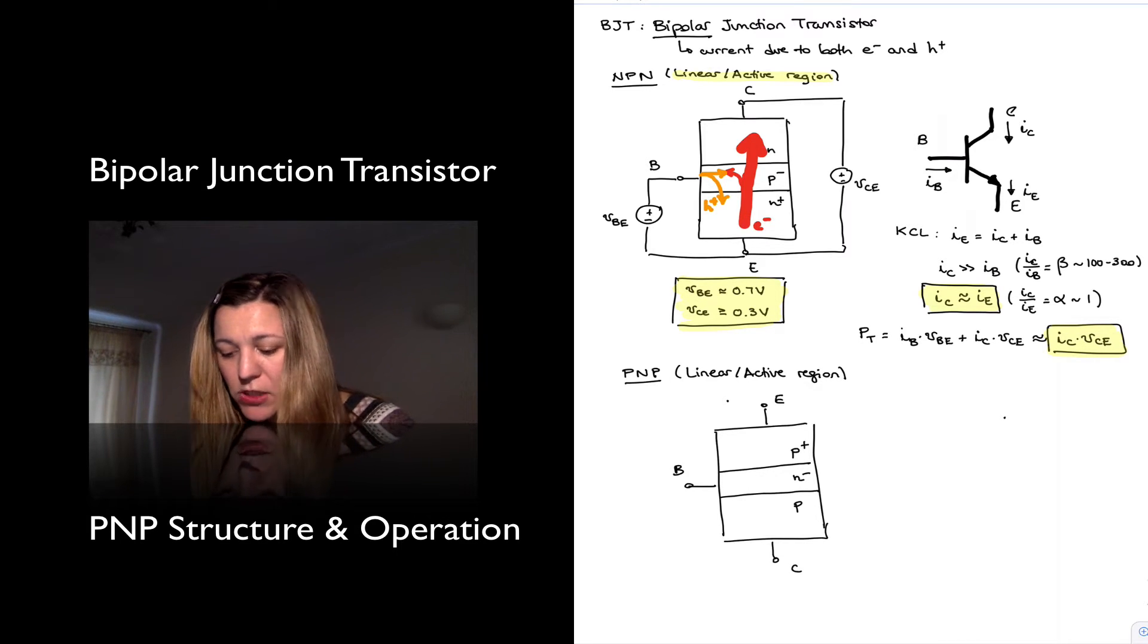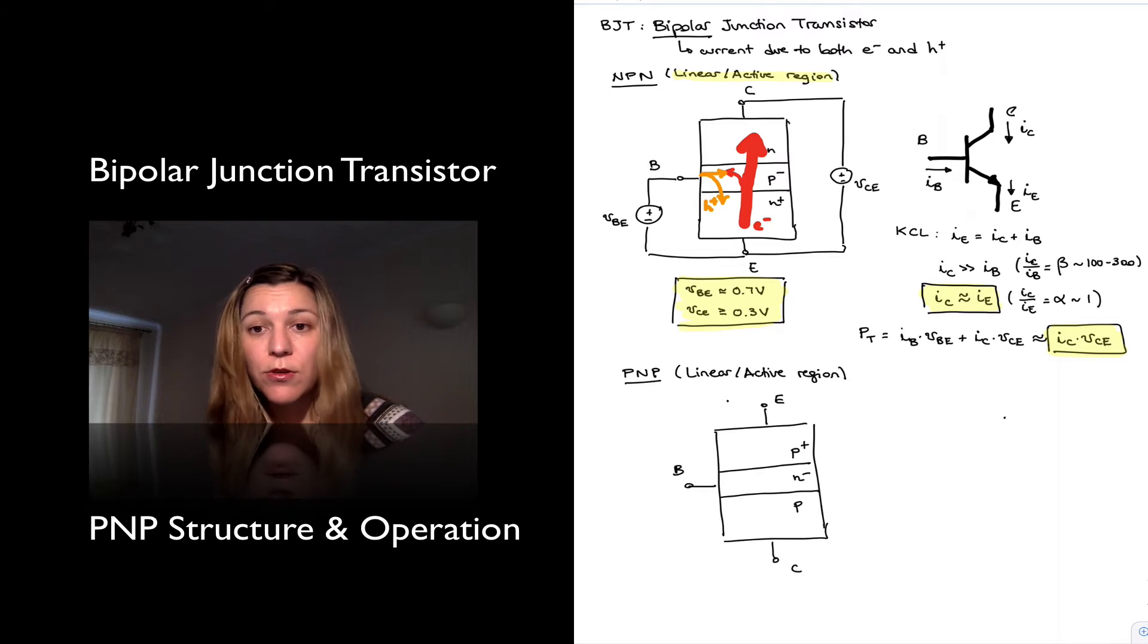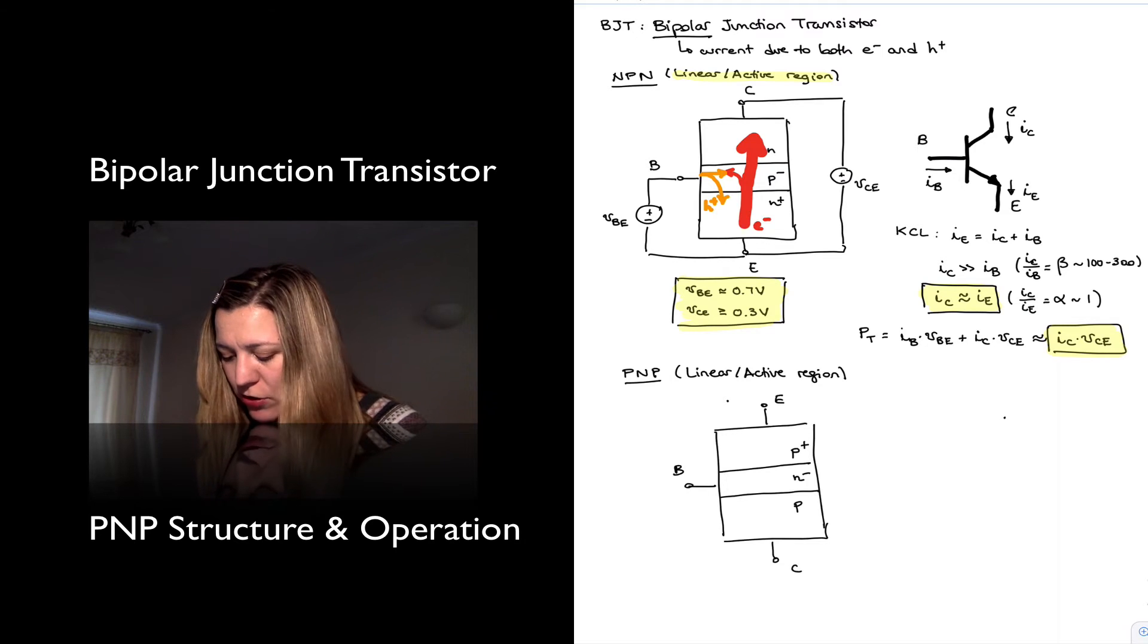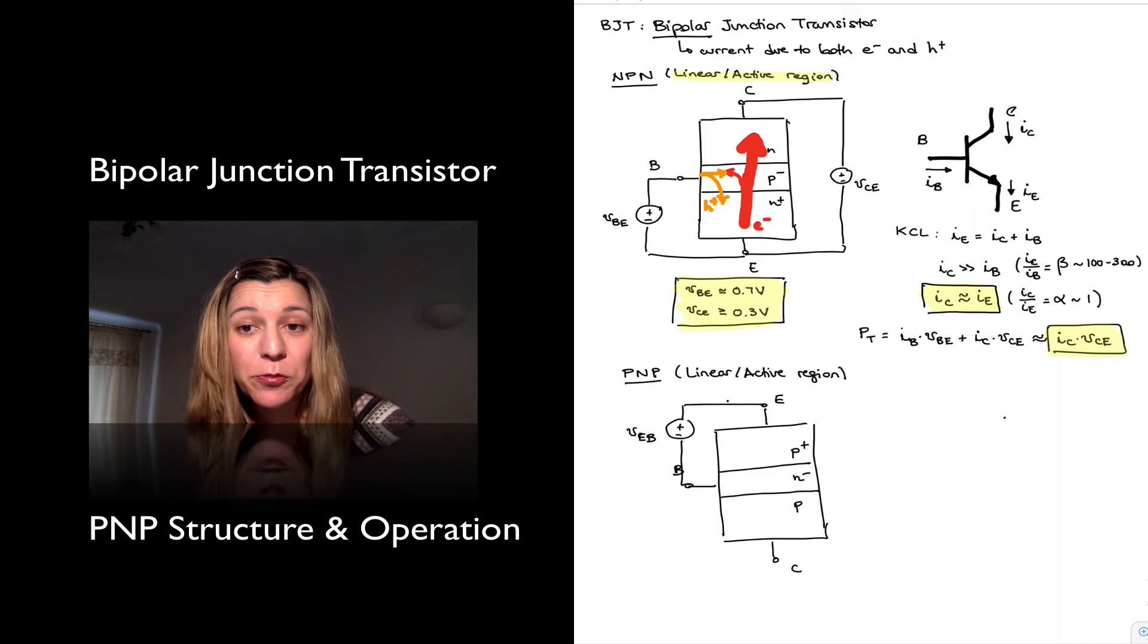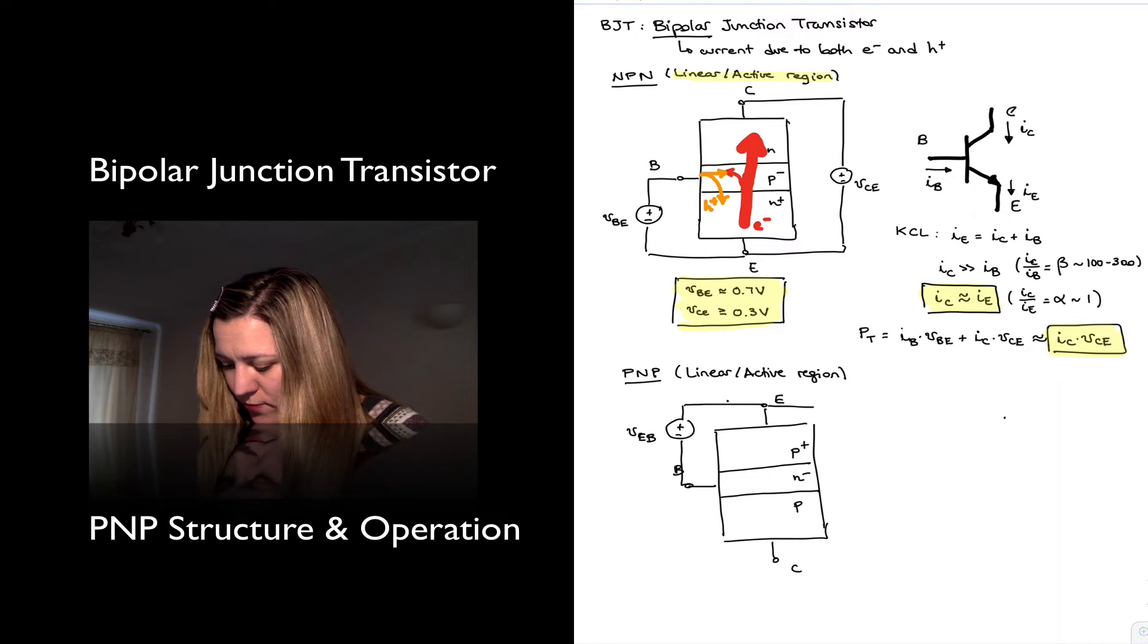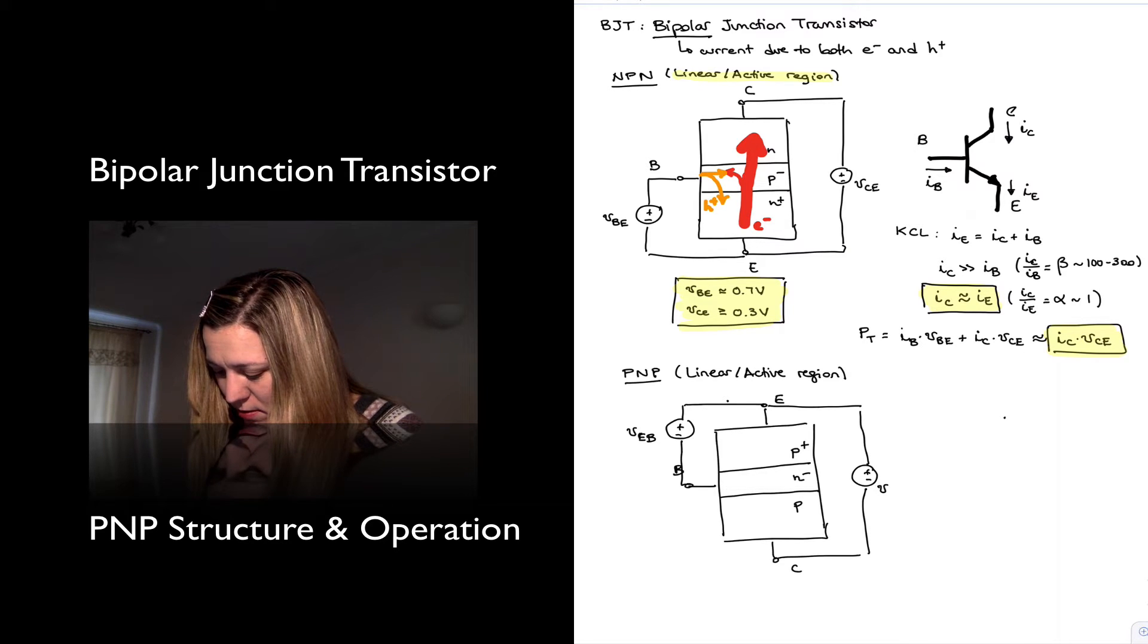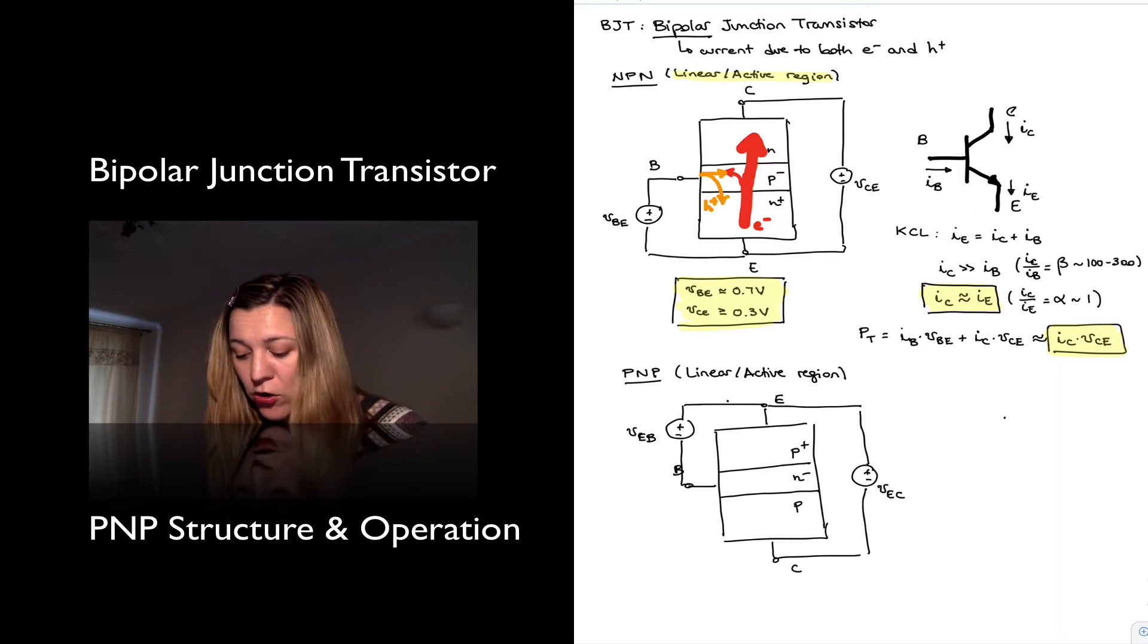And here is our transistor. And just like before, I'm going to bias it in the forward active region or the linear region. And to do that, first thing, I'm going to turn on the emitter base junction. This will be VEB. The way I turn on the junction in this case, emitter base junction, is I set my VEB approximately equal to 0.7 volts.